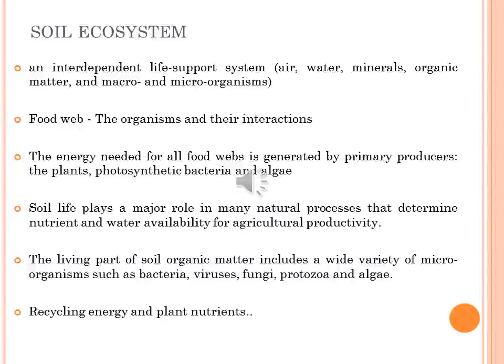The energy needed for all food web activity is generated by primary producers — plants and photosynthetic bacteria and algae — that use sunlight to transform carbon dioxide from the atmosphere into carbohydrates. Most other organisms depend on the primary producers for their energy and nutrients; they are called consumers. Consumers decompose organic matter toward humus, retain nitrogen and other nutrients, protect roots from disease and parasites, make retained nutrients available to plants, and produce hormones that help plants grow and retain water. Soil life plays a major role in many natural processes that determine nutrient and water availability for agricultural productivity.